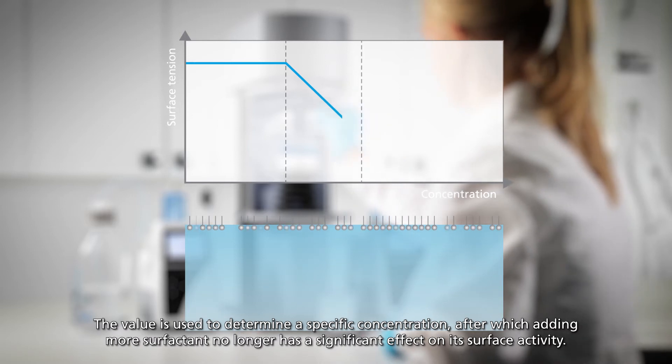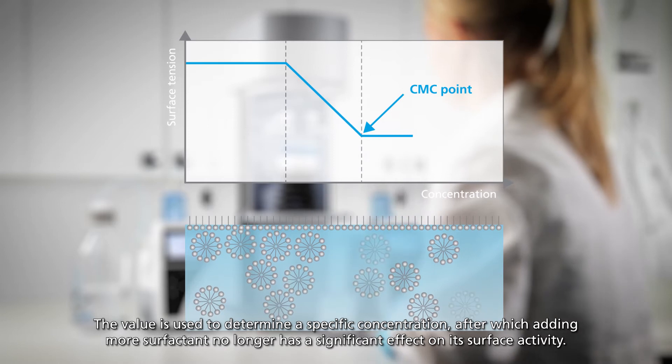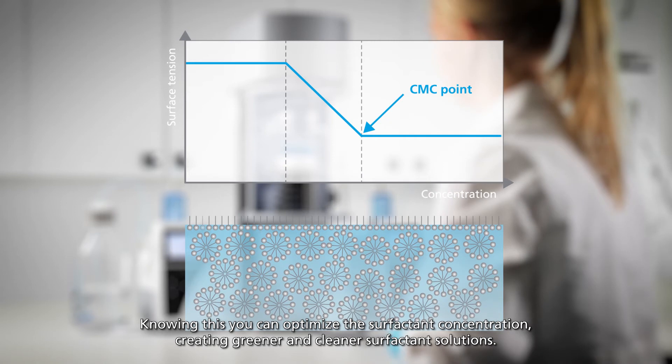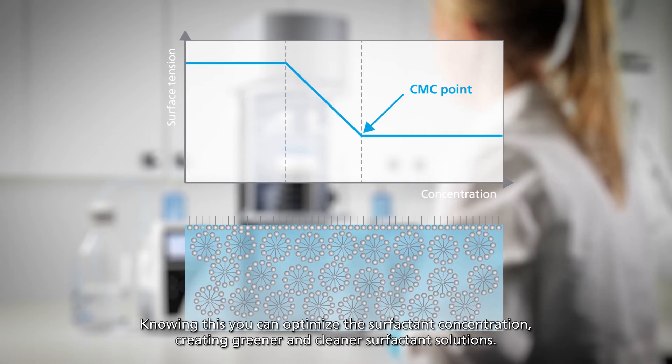The value is used to determine a specific concentration after which adding more surfactants no longer has a significant effect on its surface activity. Knowing this, you can optimize the surfactant concentration, creating greener and cleaner surfactant solutions.